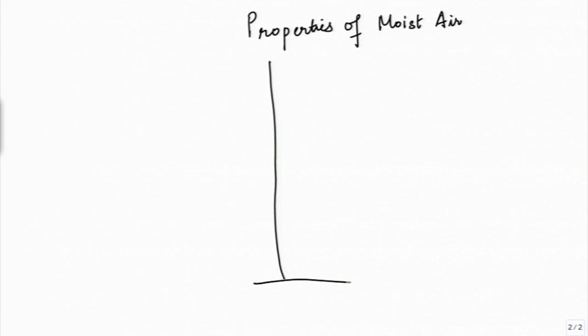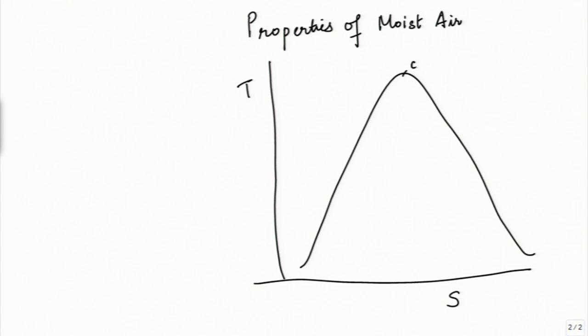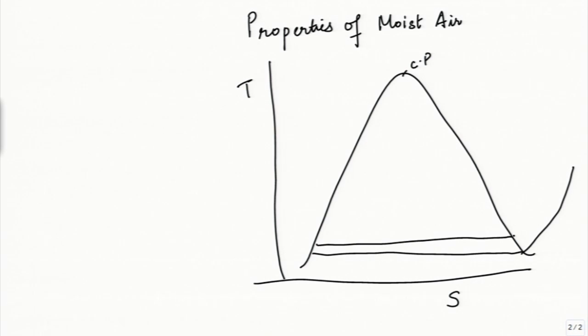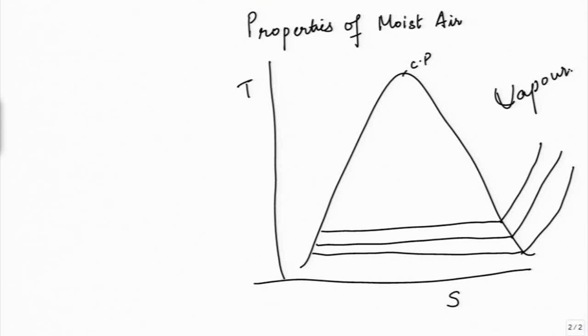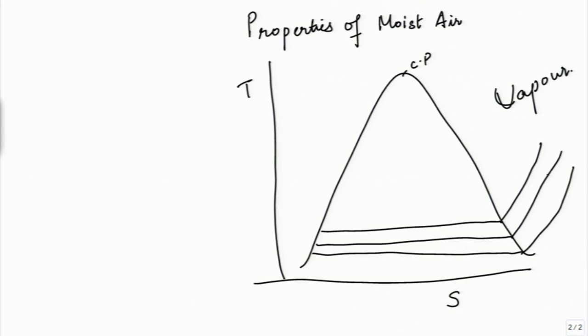To begin, we will draw the T-S diagram for water. This is the standard T-S diagram — here is the critical point, we have various constant pressure lines, and this region here is the vapor region. Water as it exists in the atmosphere is in the vapor region, and we can say its state is superheated steam at the particular pressure it is at. The vapor pressure of water is very very small, and in this superheated format water vapor can be thought of as an ideal gas.